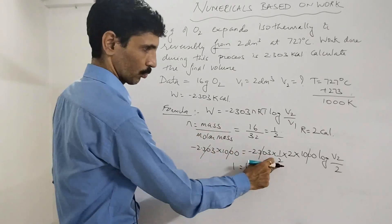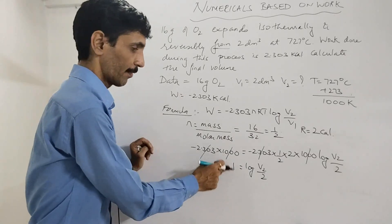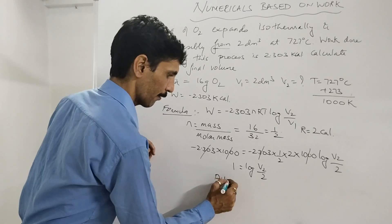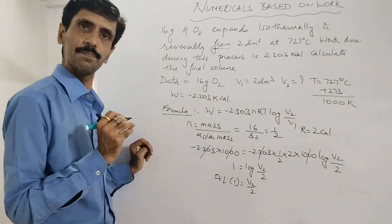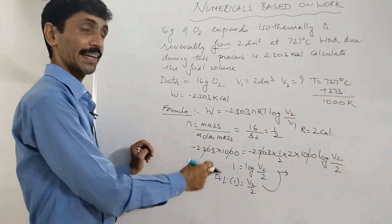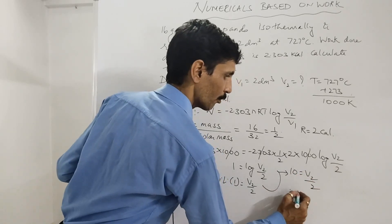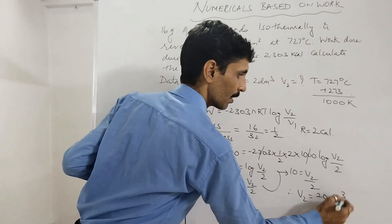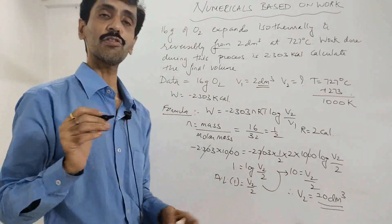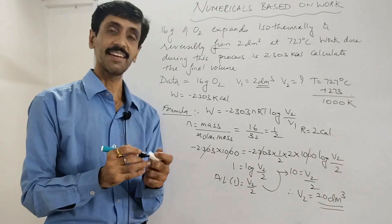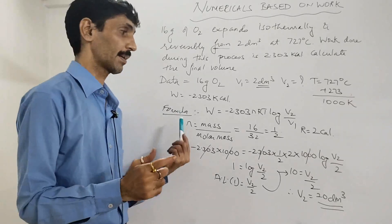We have 1 = log(V2/2). Taking antilog of both sides: antilog(1) = V2/2. Antilog of 1 = 10, so 10 = V2/2, therefore V2 = 20 dm³. The units of V2 are the same as V1, which is dm³. So the final volume is 20 dm³.